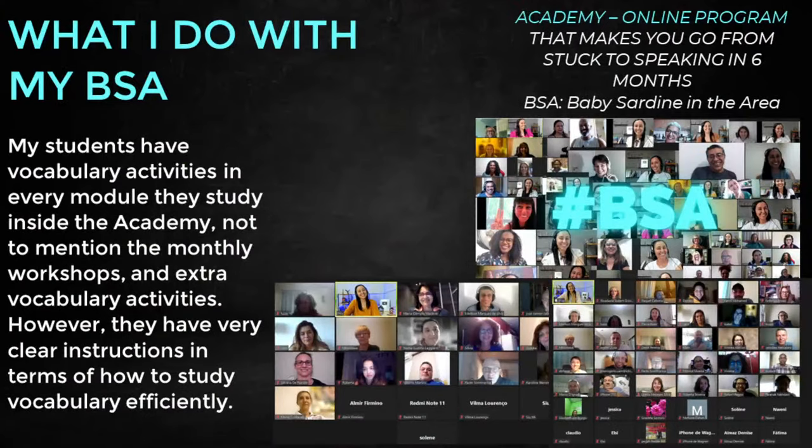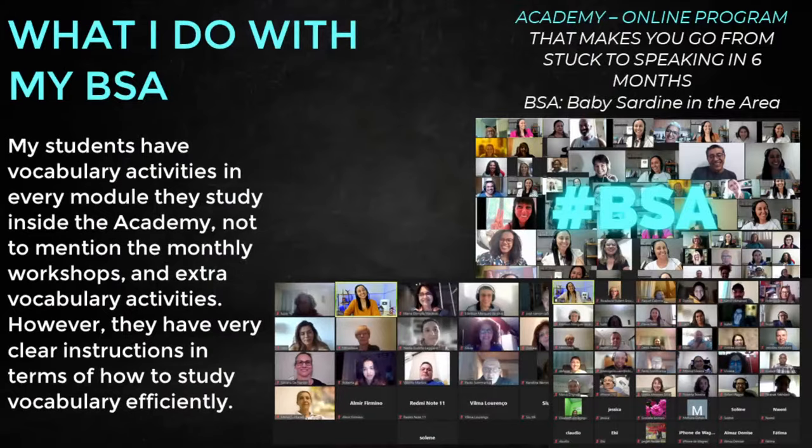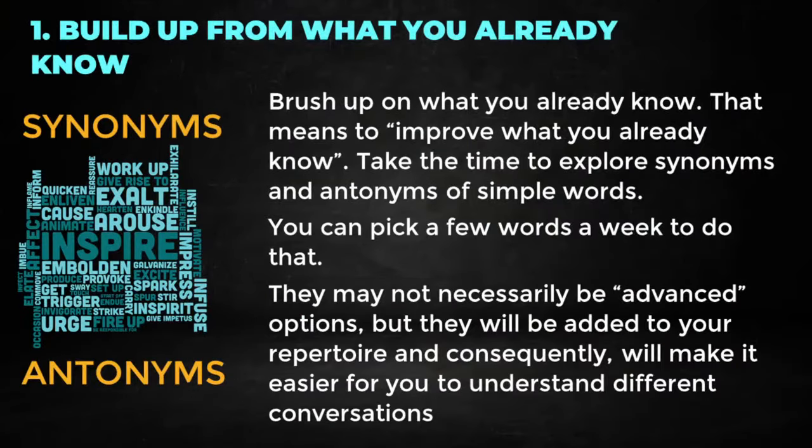With my students — I call them BSA — they always work on vocabulary, and one thing I help them change is the way they study. They have clear instructions. So the first tip: build up from what you already know. As you can see on the screen, synonyms and antonyms. This is the number one strategy you're going to follow starting now at a pre-intermediate level, because at this level you already have a range of vocabulary.